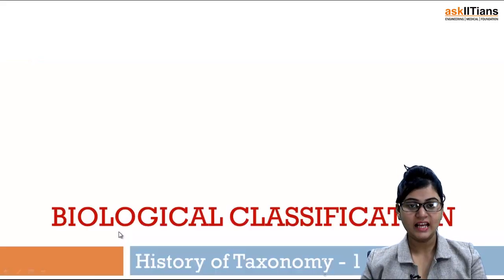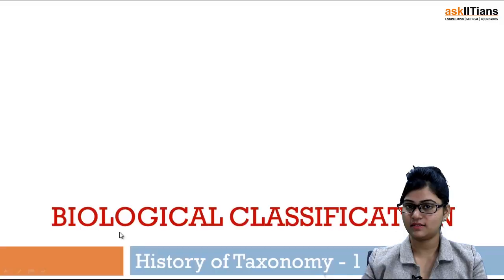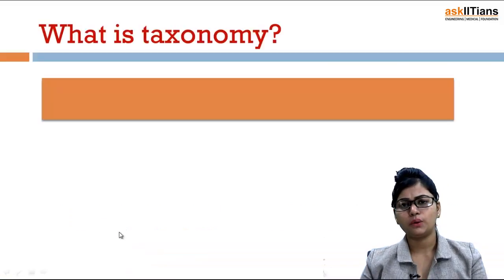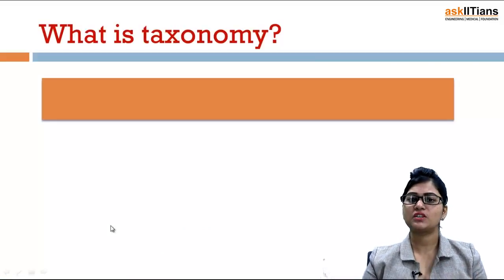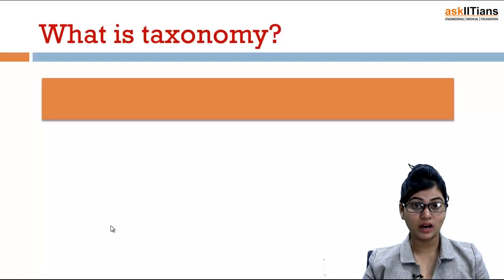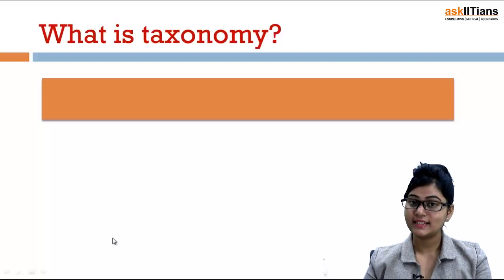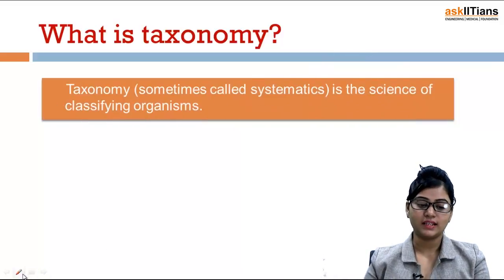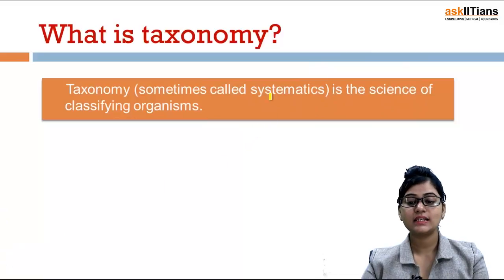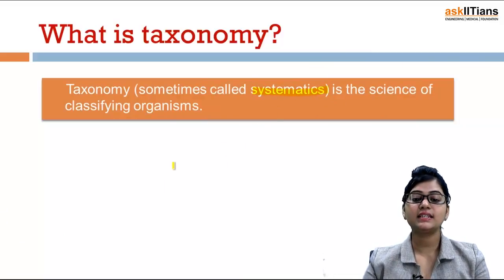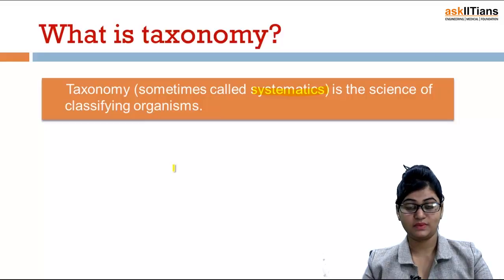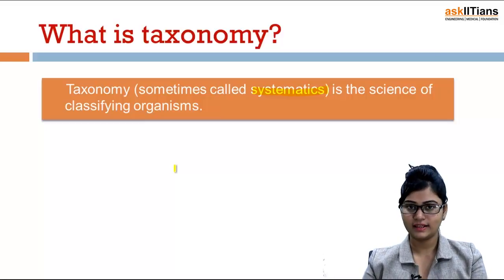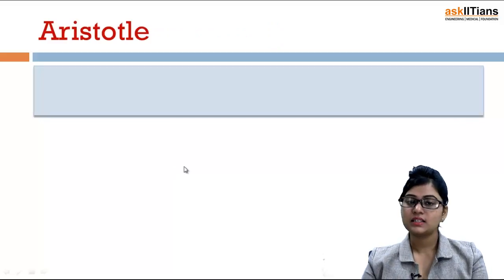Biological classification. Now we will be understanding history of taxonomy, part one. Before beginning with this history of taxonomy, I would like to ask you one question: what is taxonomy? Taxonomy, sometimes also known as systematics, is the science of classifying organisms. It is a science in which we classify organisms. Let's begin with the history.